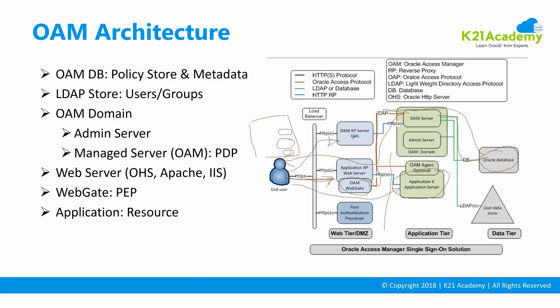When the user hits submit, the request goes to the OAM reverse proxy again. This configuration — where the submit button sends the request — is defined in the authentication policy in Oracle Access Manager Console. The request goes through the front-end channel on port 14100. Oracle Access Manager collects the username and password, forwards them to the LDAP server for validation, creates a session, and assigns cookies.